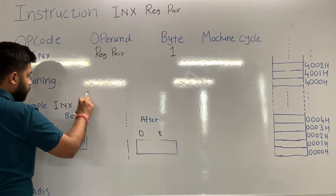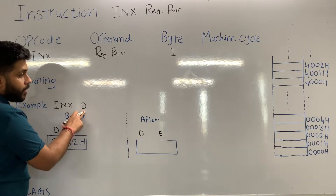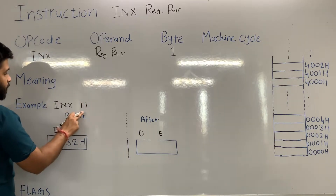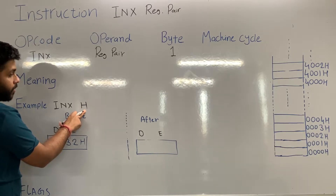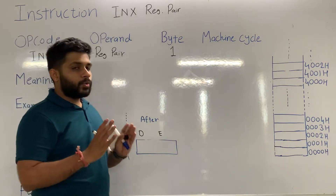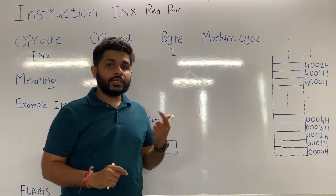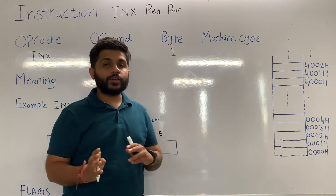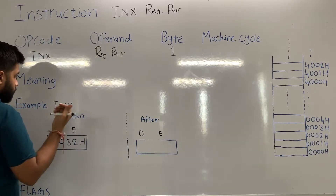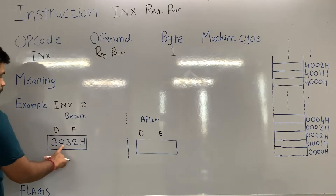If you use INX D, it means increment the content of the DE pair by one. INX H means increment the content of the HL pair by one. Only predefined register pairs — BC, DE, and HL — can be used; you cannot make any random pairs. In this example we are considering INX D.